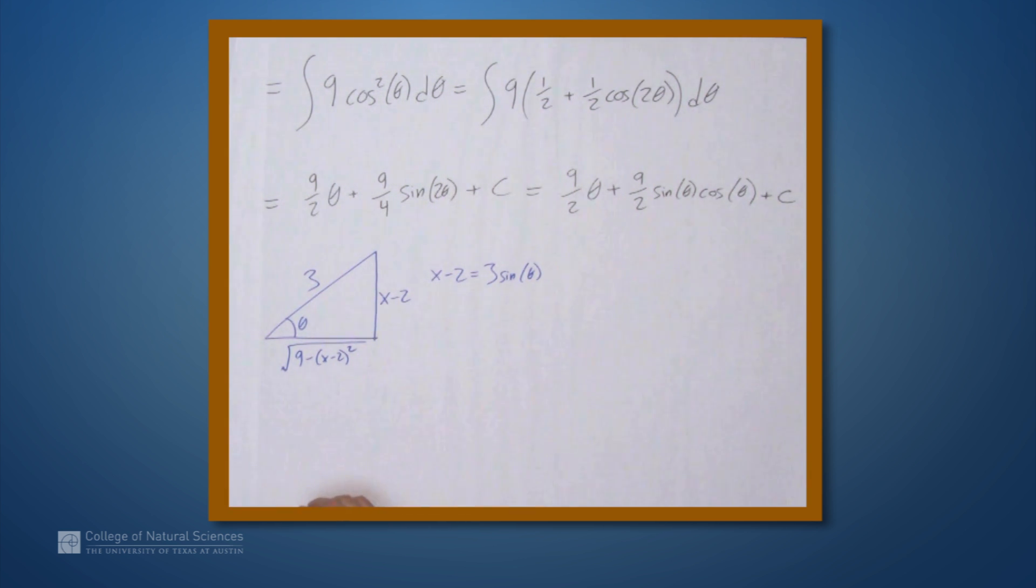So, let's actually solve for theta in this thing. So this gives us (x - 2)/3 equals sine theta, from which we see that theta is arcsine of (x - 2)/3. So this thing is now equal to 9 halves times theta, which is this expression, arcsine of (x - 2)/3.